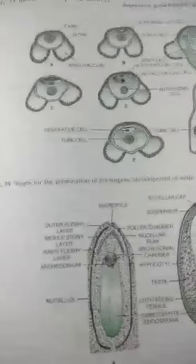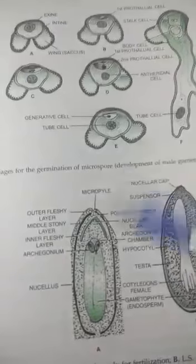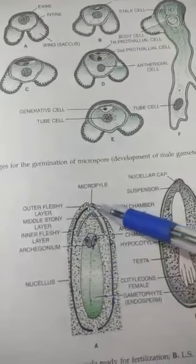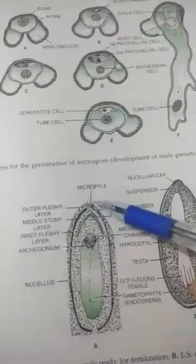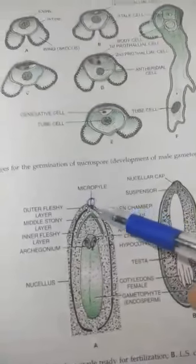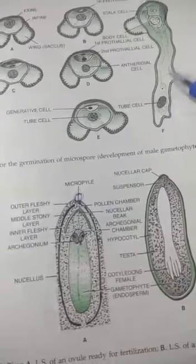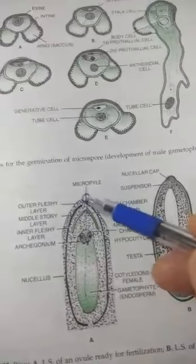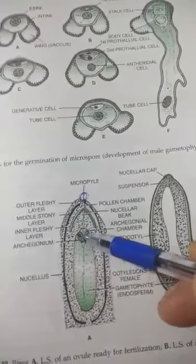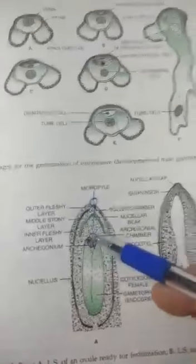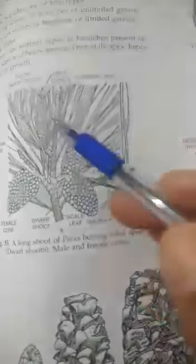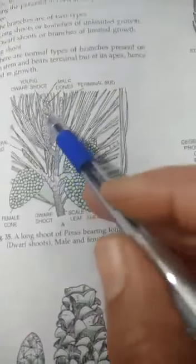This is the gymnosperm archegonium. The nucellus of the ovule contains this archegonium, inside which is the egg — this is the female gametophyte. Now these winged pollen grains will be freed from their microsporophyll and through the air they will reach the ovule. At the micropyle opening of the ovule, the pollen grain will fall — pollination will occur. Then a pollen tube will form, and through this pollen tube the male gamete will transfer, enter the archegonia, and fertilize the egg to form the zygote.